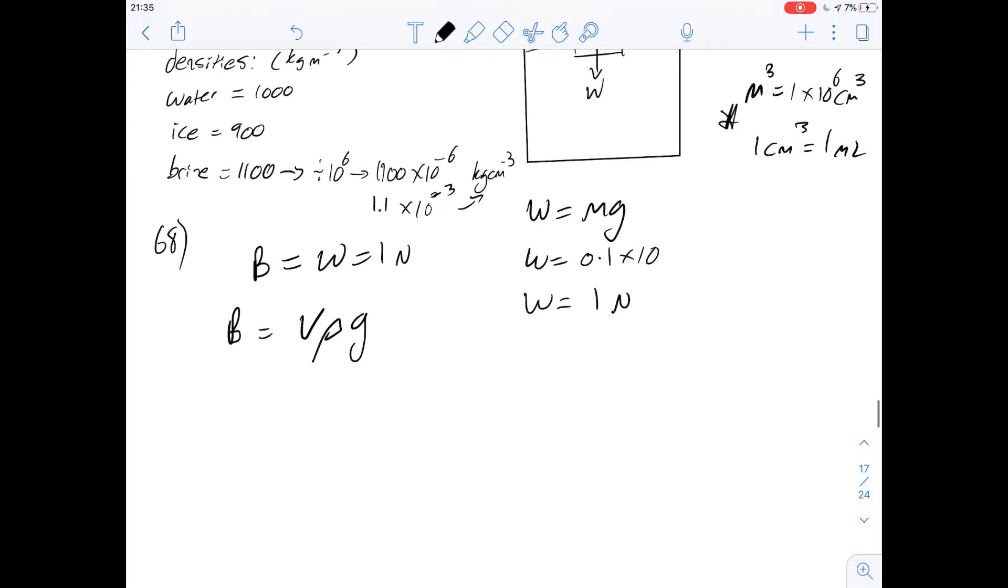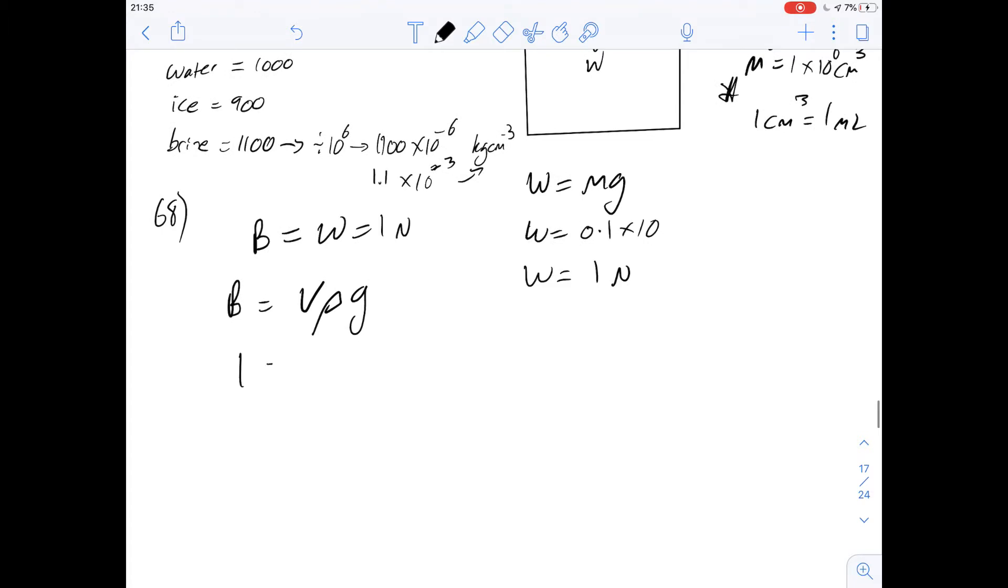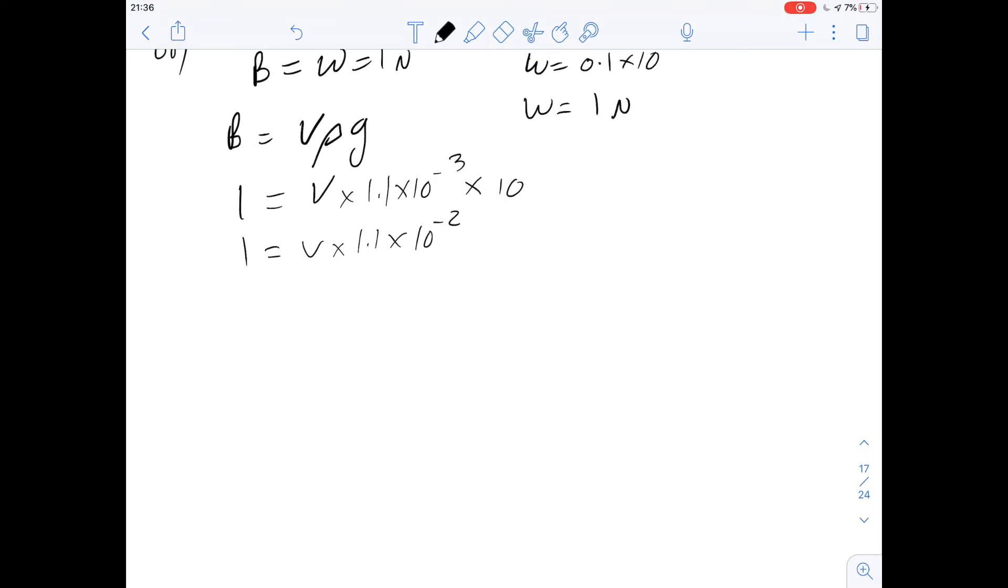So now the units have been fixed, we can work out what the buoyancy force is. And we know it's going to be 1 newton, so we can set this equal to 1. We need to know the volume. The density is going to be 1.1 times 10 to the minus 3. And the acceleration due to gravity is going to be 10. So we can simplify this even more to V times 1.1 times 10 to the minus 2 equals 1.